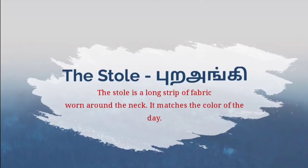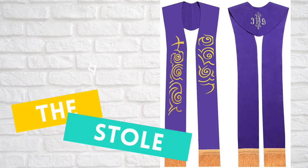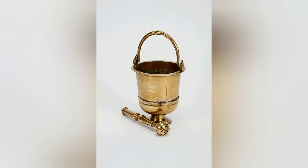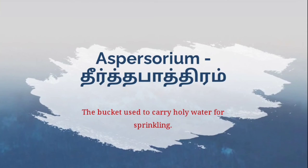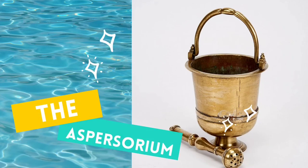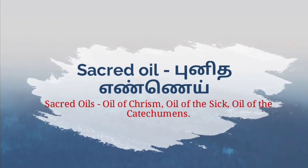The stole is the long stripe of fabric worn around the neck; it matches the color of the liturgical day — and that's the stole. The vessel used to carry holy water for sprinkling is called the aspersorium. Sacred oils — such as the oil of chrism, oil of the sick, and oil of the catechumens — are also symbols of the church.